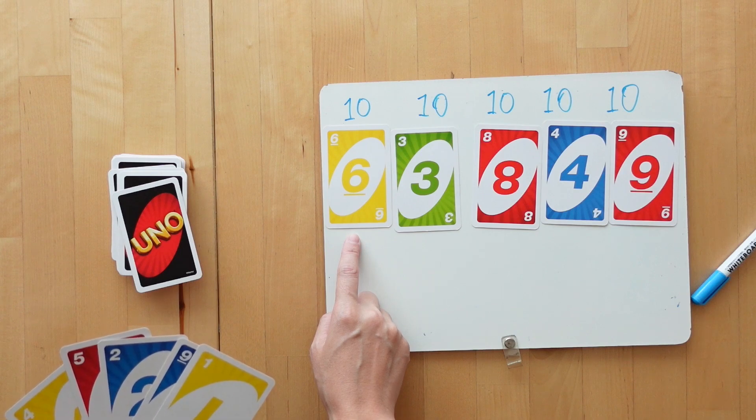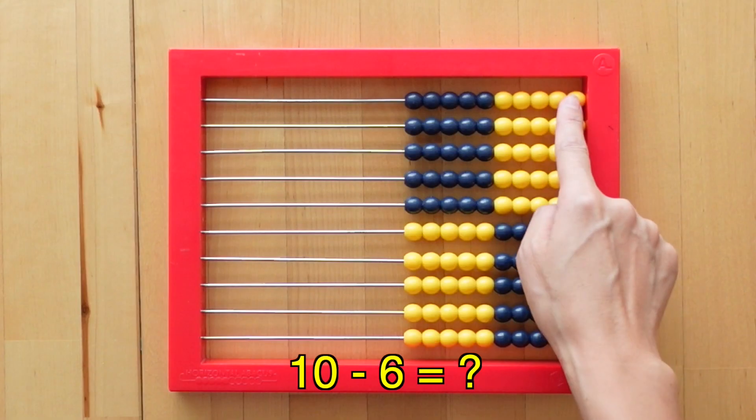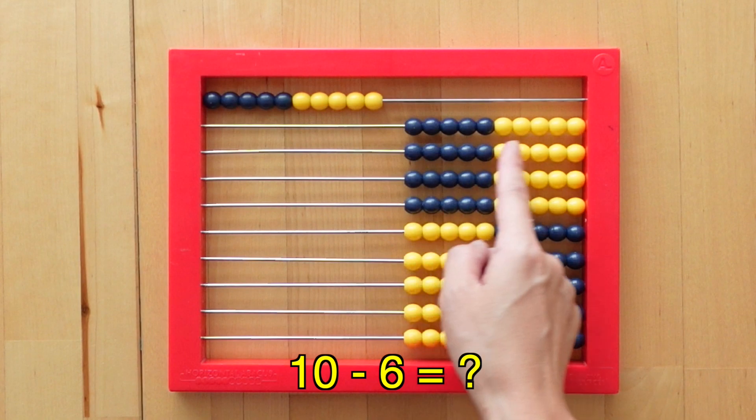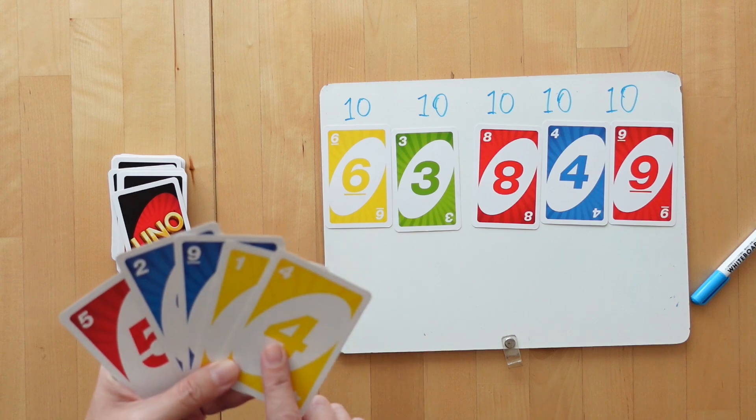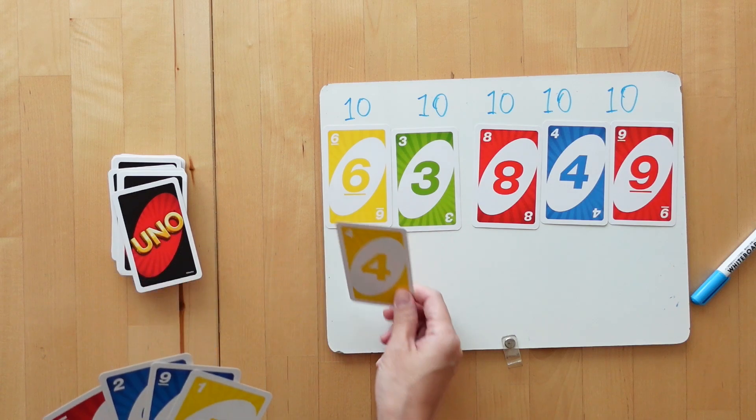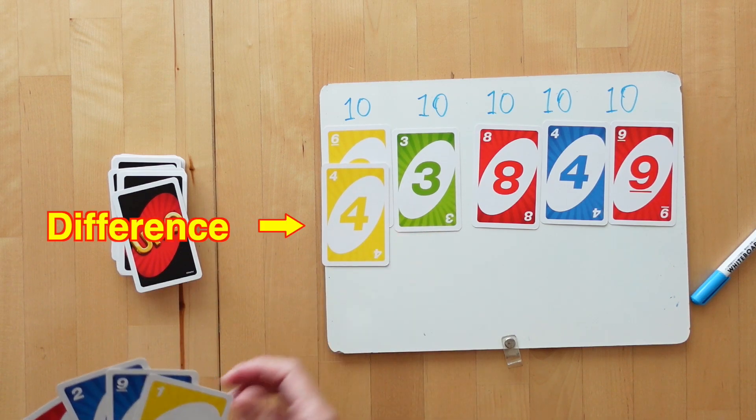Here, the difference between 10 and 6 is 4. And we can use the abacus to see this difference because there are 4 more beads on the top row. So we check our hand of cards to see if we have it and we do so we place the number cards below the subtraction card.